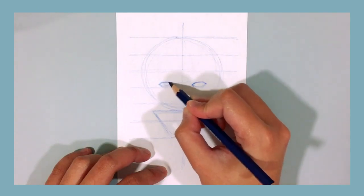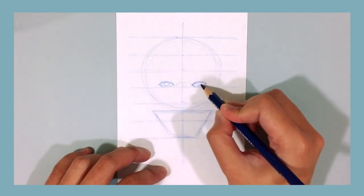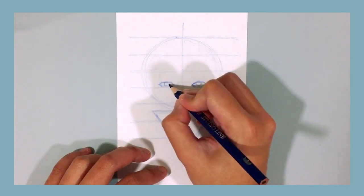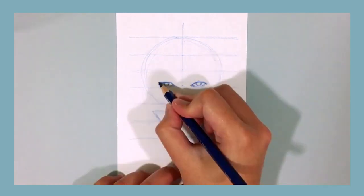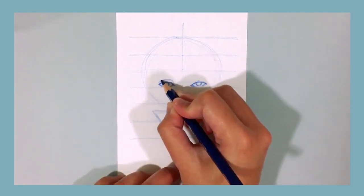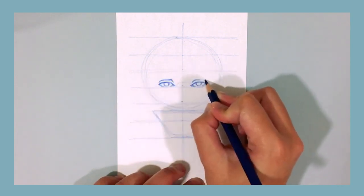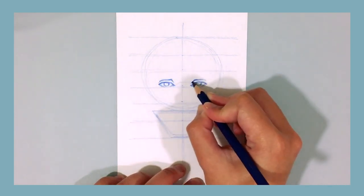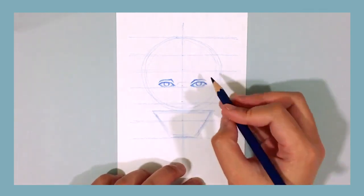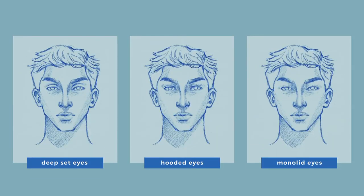Then we're going to draw circles for the pupils, and then draw two lines above the eyes which basically mimic the top curve of the eyes. This represents the eyelid. With this, you can draw it closer to the eyes or further from the eyes to create either deep-set eyes or hooded eyes, or you could choose not to draw it at all for monolid eyes.